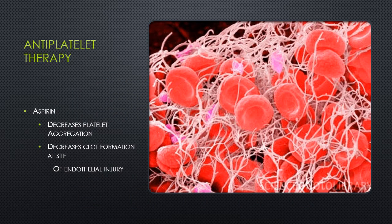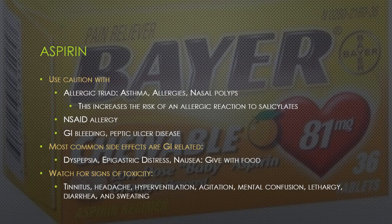Aspirin is used to decrease platelet aggregation in the bloodstream, which prevents clot formation at the site of endothelial injury. Aspirin should be used cautiously in patients who have allergies, specifically the allergic triad of asthma, allergies, and nasal polyps, as patients with the allergic triad have an increased risk of allergic reaction to salicylates. Patients with NSAID allergies are often allergic to aspirin as well. Patients with active GI bleeding and peptic ulcer disease are not candidates for aspirin therapy.